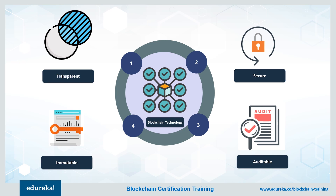Blockchain technology can be summarized as a distributed ledger technology that underlies cryptocurrencies like Bitcoin and provides a way to record and transfer data that is transparent, secure, auditable, and resistant to outages. Blockchain technology has the ability to make organizations that implement it transparent, democratic, decentralized, efficient, and secure.